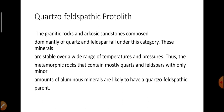Quartzofeldspathic protolith: इस protolith में granitic rocks और arkosic sandstone से बनती है, जिसमें मुख्यतः quartz और feldspar के minerals बहुतायत में रहते हैं. ये minerals stable हैं over a wide range of temperature and pressure. Thus, the metamorphic rocks that contain mostly quartz and feldspar with only a minor amount of aluminous minerals are likely to have a quartzofeldspathic parent rock. इस quartzofeldspathic parent rock में minor amount में aluminous minerals पाई जाती हैं.